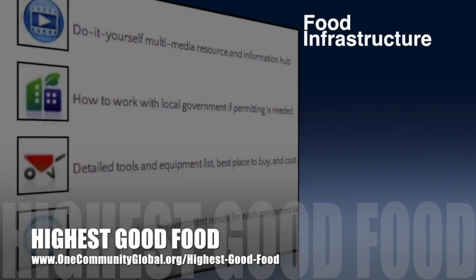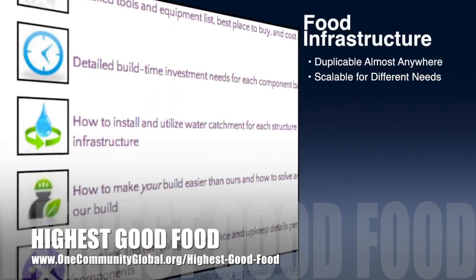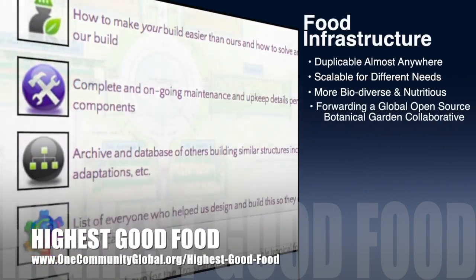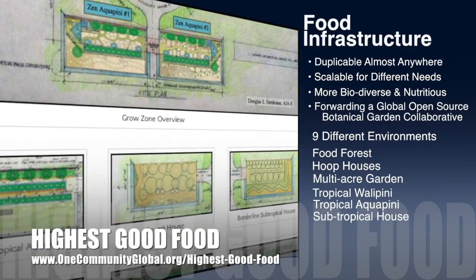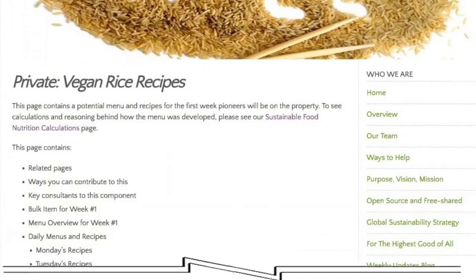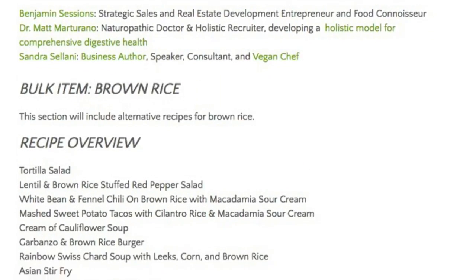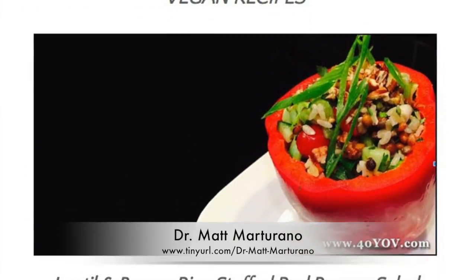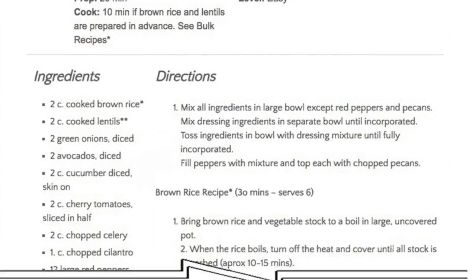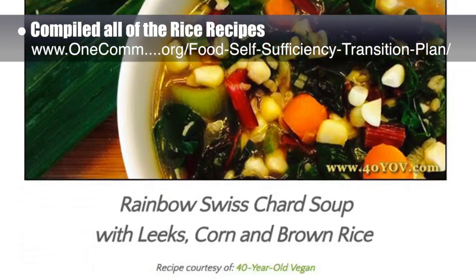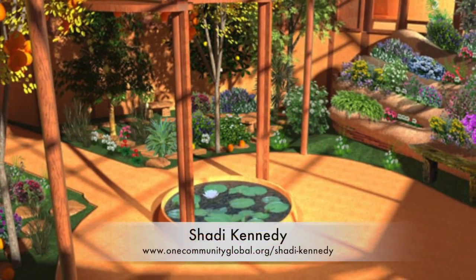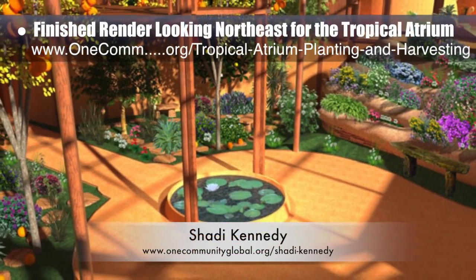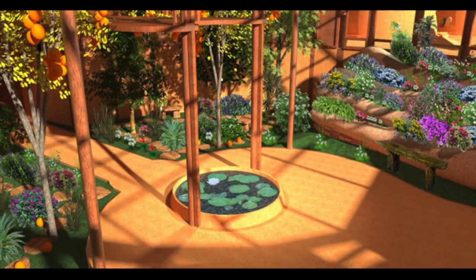OneCommunity's approach to highest good food is duplicable almost anywhere, scalable for different needs, more biodiverse and nutritious, part of forwarding a global open source botanical garden collaborative, and includes nine different free shared and duplicable growing environments. As part of our food self-sufficiency transition plan — featuring contributions from naturopathic Dr. Matt Martorano, creator of the Coherent Model for Comprehensive Digestive Health — this week we compiled all of the rice recipes to be added to our updated recipe strategy. Shadi Kennedy, artist and graphic designer, also finished a render looking northeast for the tropical atrium planting and harvesting plan page.